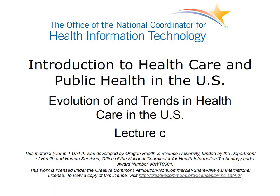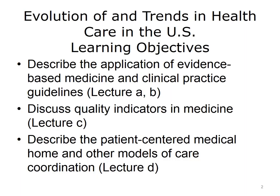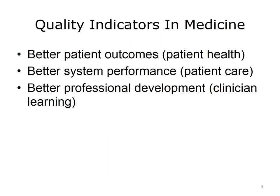The learning objectives for this unit, Evolution of and Trends in Healthcare in the U.S., are to describe the application of evidence-based medicine and clinical practice guidelines, discuss quality indicators in medicine, and describe the patient-centered medical home and other models of care coordination. This lecture will discuss quality indicators and comparative effectiveness research.